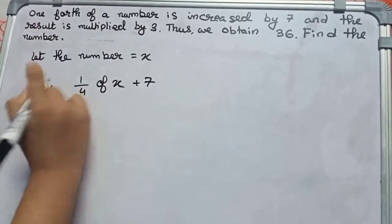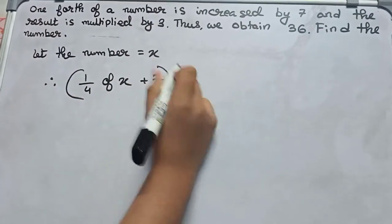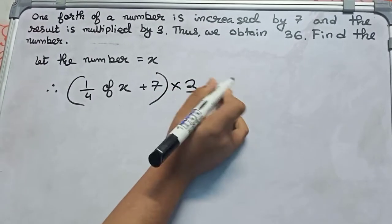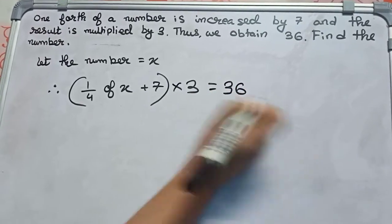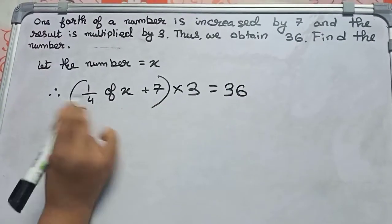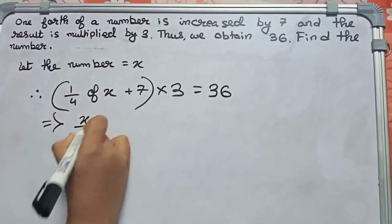Therefore plus 7, and the result is multiplied by 3, so we put this in bracket and multiply it by 3. The result is obtained as 36. So now we solve this. 1/4 of x means it becomes x/4 plus 7 into 3 equals 36.